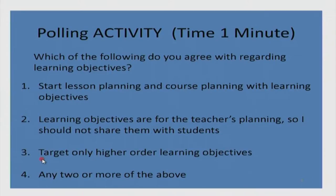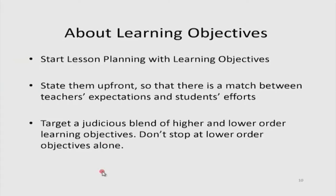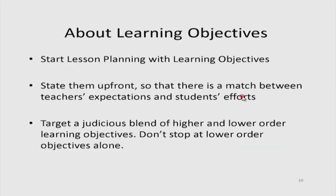Recalling the sessions on Bloom's taxonomy and the hierarchy of cognitive levels: there are six levels of cognitive tasks, lower and higher order. We did not say target only higher-order learning objectives — we said target a judicious blend of higher and lower order objectives appropriate to the topic. Do not stop at lower-order objectives alone. If you target some higher-order objectives, many lower-order ones are subsumed within them. Ensure an appropriate blend of all levels.